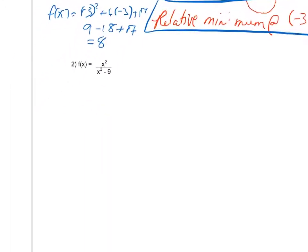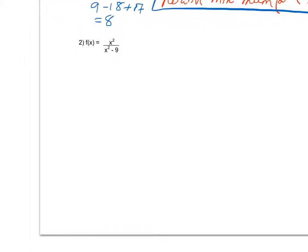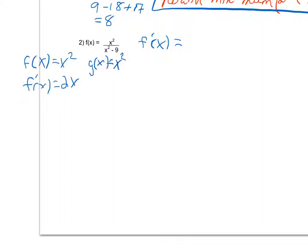Here's one more example. First, I'll find the derivative. I notice that to find this derivative, I need to apply the quotient rule. Now that I've set up the quotient rule, I can find the first derivative of the overall function: derivative of the first times the second, minus the derivative of the second times the first.